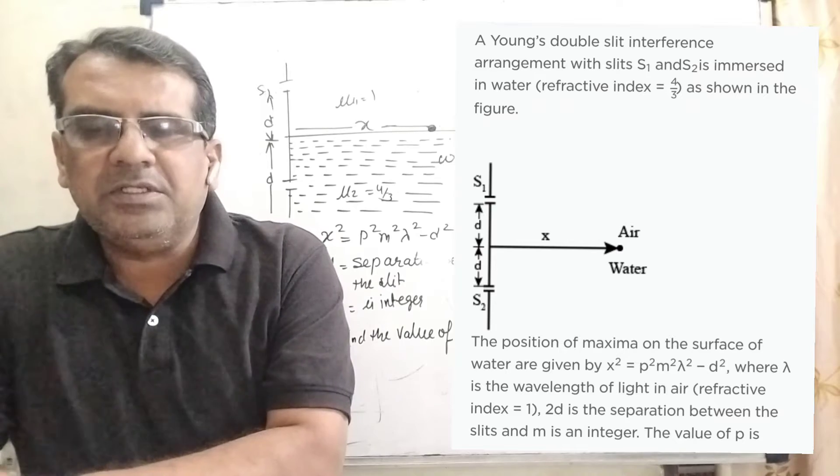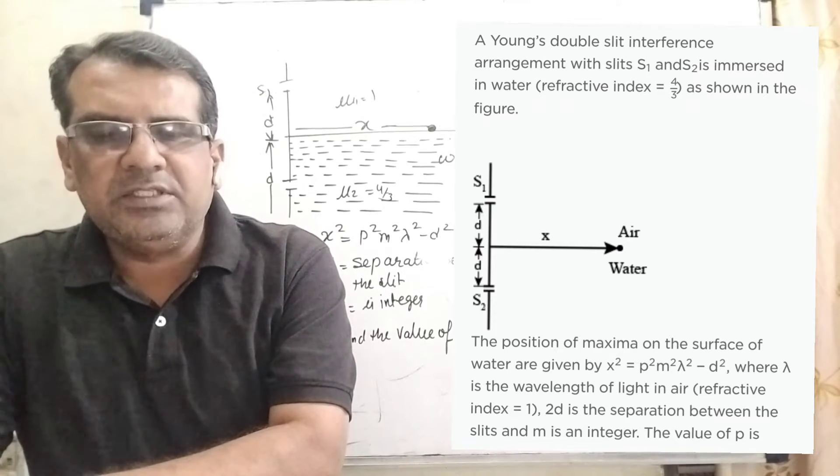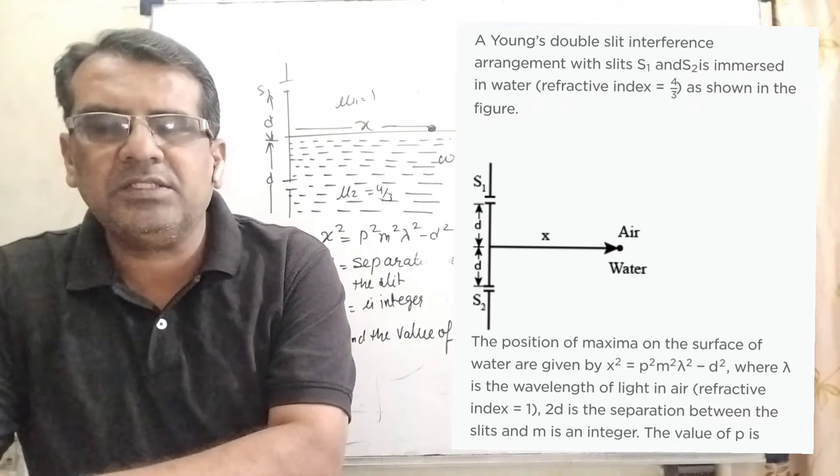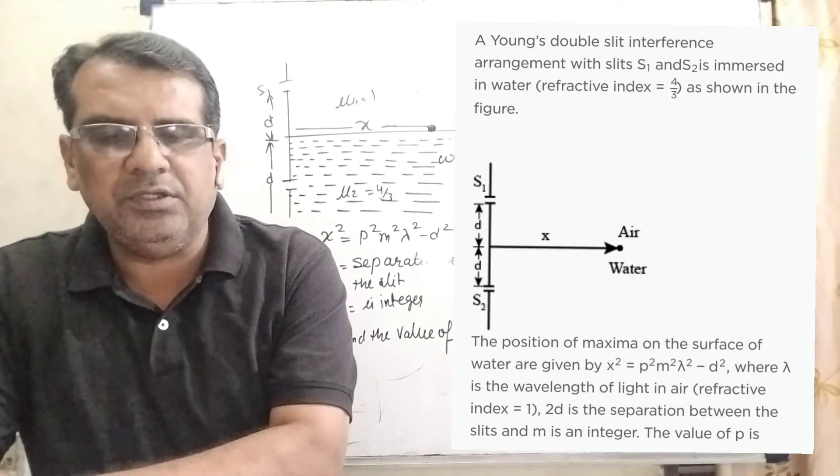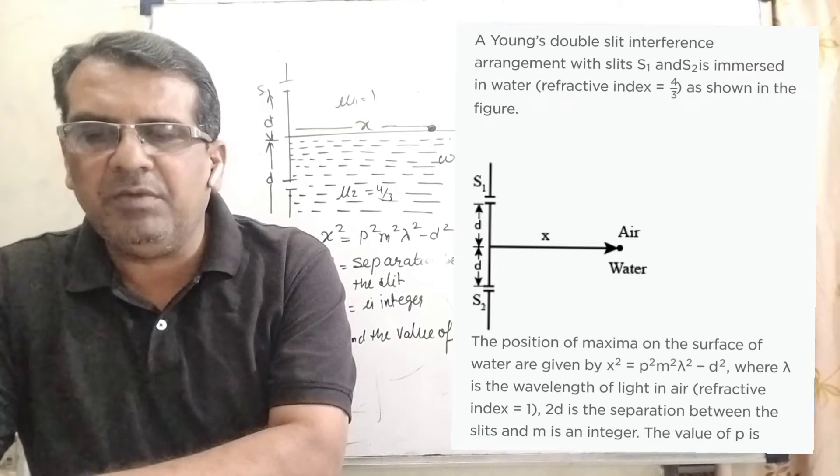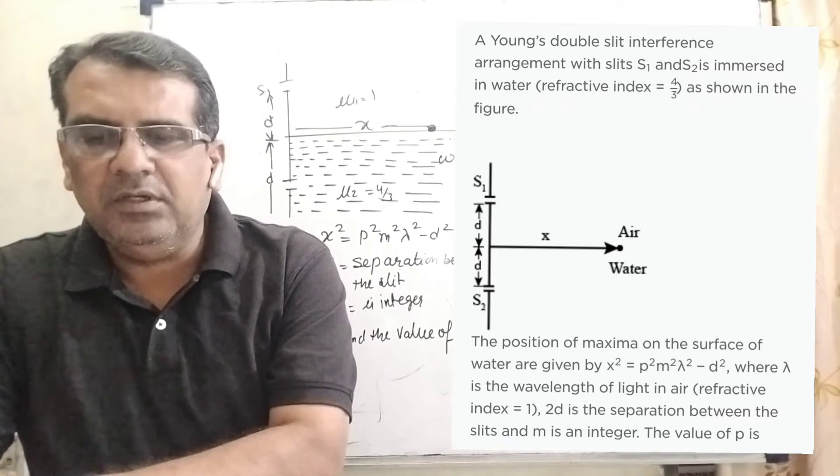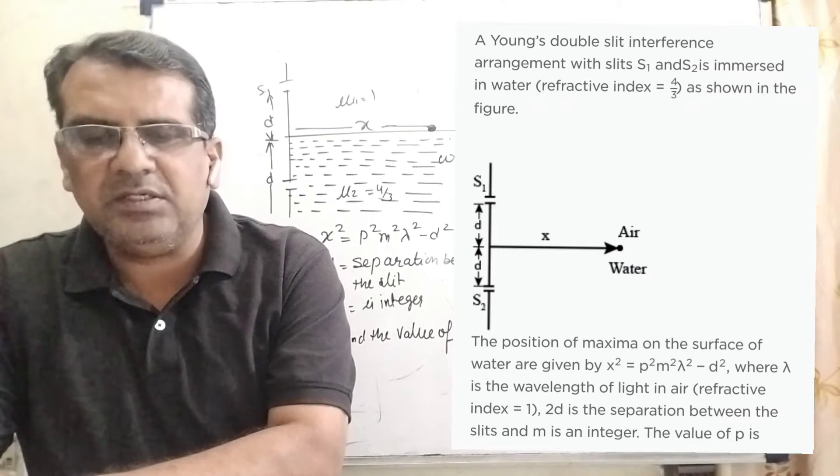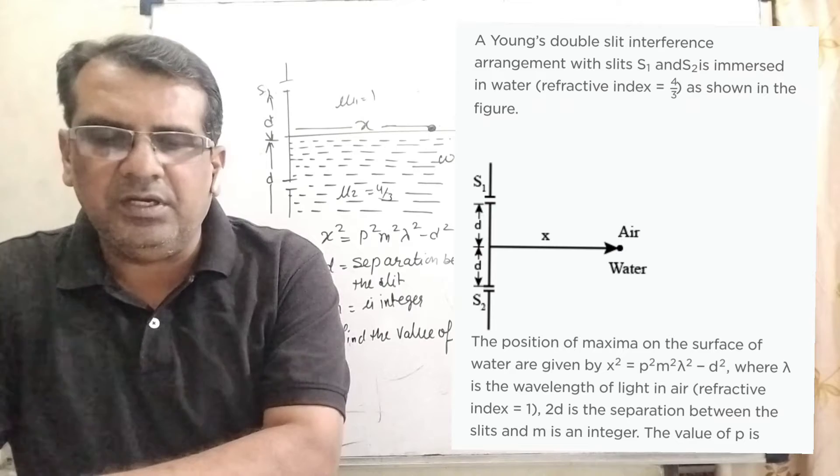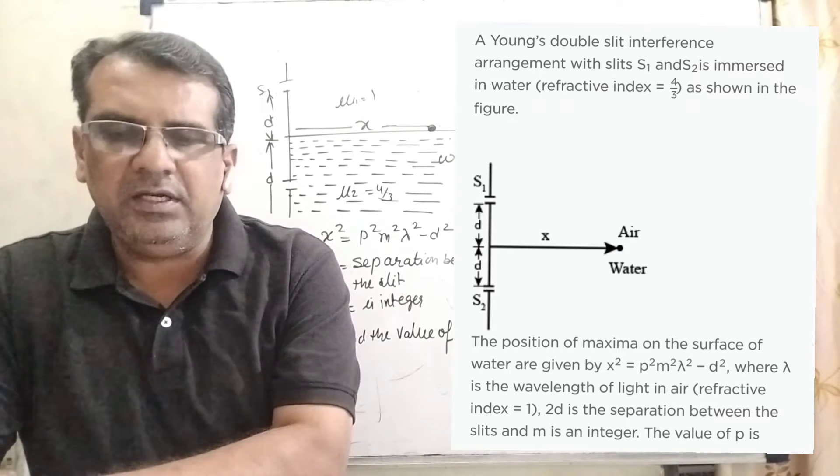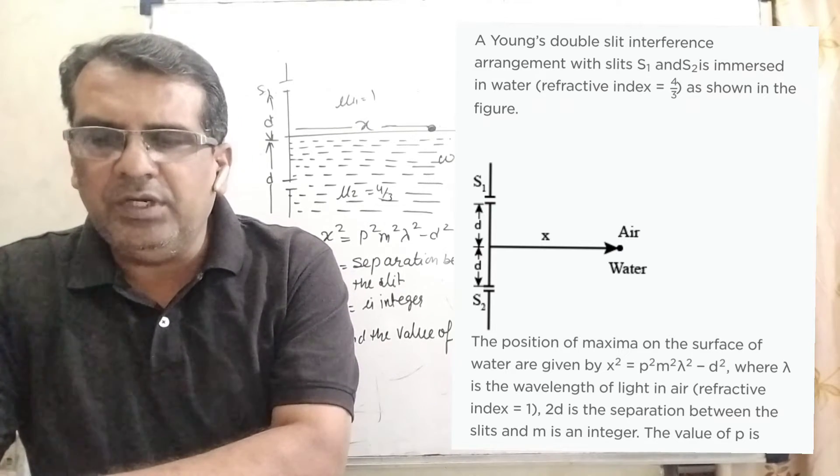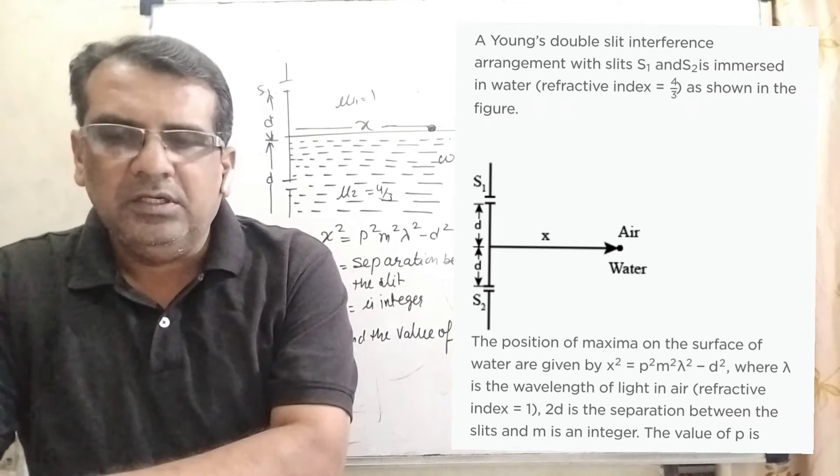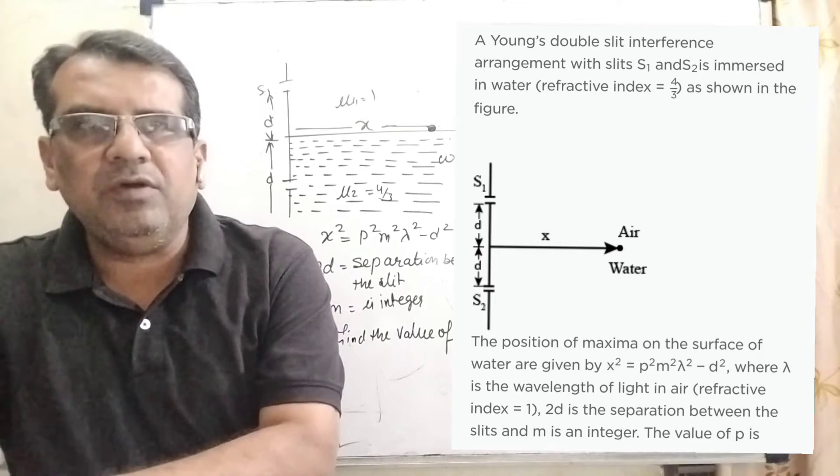Now here is the question. A Young's double slit interference arrangement with slit S1 in air and S2 immersed in water, refractive index 4/3, as shown in the figure. The positions of maxima on the surface of water are given by x² = p²m²λ² - d², where λ is the wavelength of light in air, refractive index of air is 1, 2d is the separation between the slits, and m is an integer. Find the value of p. This question is from JEE Advanced 2015.